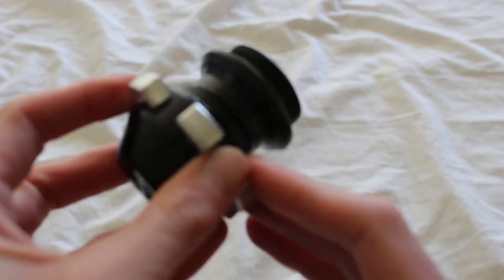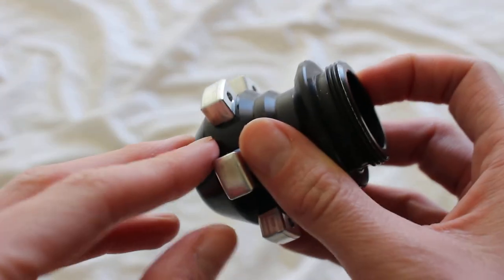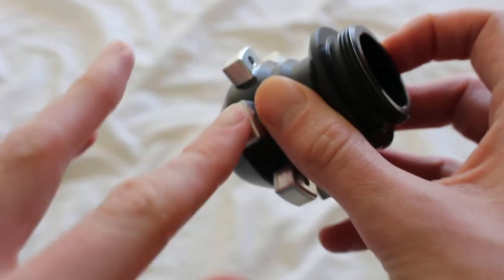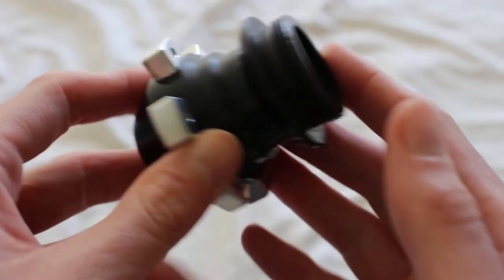Ultra Sabers also sells a similar pommel called the Scorpion, and it's pretty much the same as this, except this portion is spiked instead of flat like this. So if you like that spiked look, then you would go with the Scorpion instead.